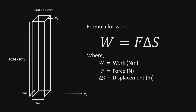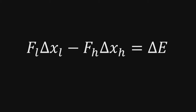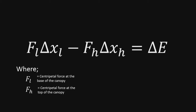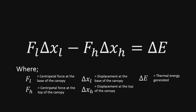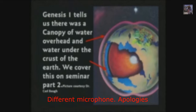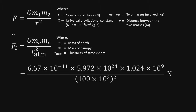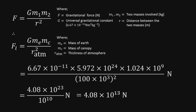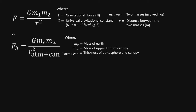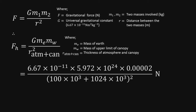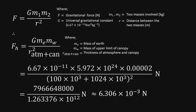So how much heat will be produced? The formula would be: FL·ΔXL minus FH·ΔXH equals ΔE, where FL and FH are the centripetal forces acting on the canopy at its base and top respectively, and ΔXL and ΔXH are the displacements of the water at the base and top of a unit column of the canopy respectively. Since the diagram shows the canopy just above the atmosphere, the centripetal force at the base FL equals 4.08×10¹³ Newtons, and the centripetal force at the top FH equals approximately 6.306×10⁻³ Newtons.